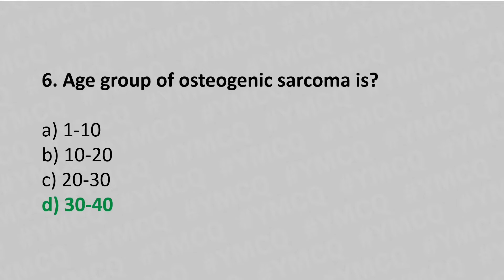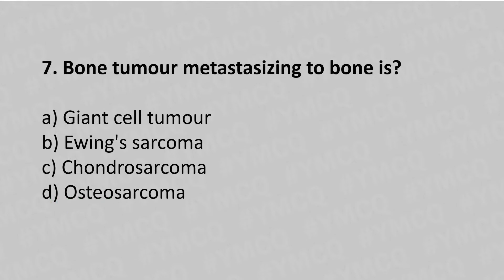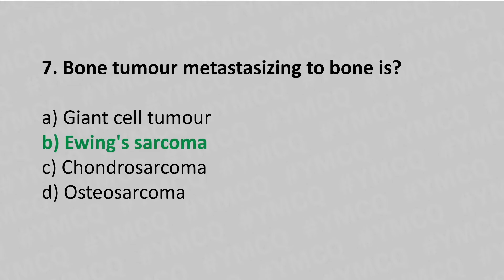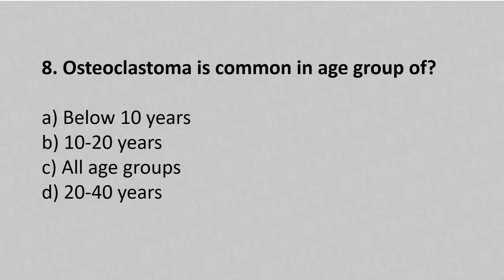Now let's move to question number 7. Bone tumor metastasing to bone is — option A: giant cell tumor, option B: Ewing sarcoma, option C: chondrosarcoma, option D: osteosarcoma. The answer is option B: Ewing sarcoma.